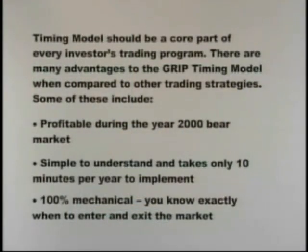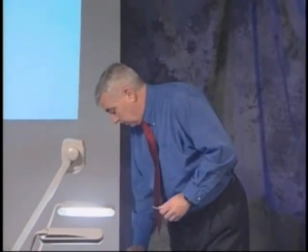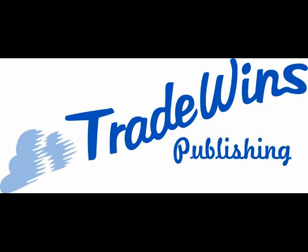To summarize our timing model: it was profitable during the year 2000 bear market — when we got out on May 2nd we had a profit for that year. It's simple to understand; all you need is a calendar and it takes maybe 10 minutes a year to implement. Enter October 28th, exit May 5th — it's a good, simple, 100% mechanical strategy. You know exactly when you're going to buy, hold, and sell. The historical returns of the timing model greatly exceed the buy-and-hold approach with much less risk, because you're in the market for a shorter period of time — defying the conventional wisdom that higher returns require higher risk.